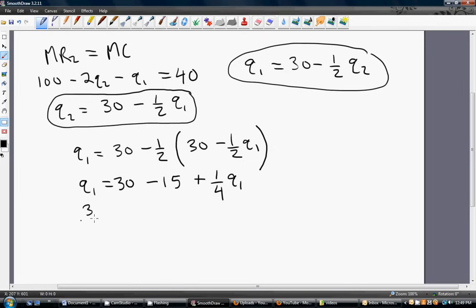And we get 3 fourths, the output of firm 1, equals 15. And in this case, we are going to get 60 divided by 3 or 20 units of output.